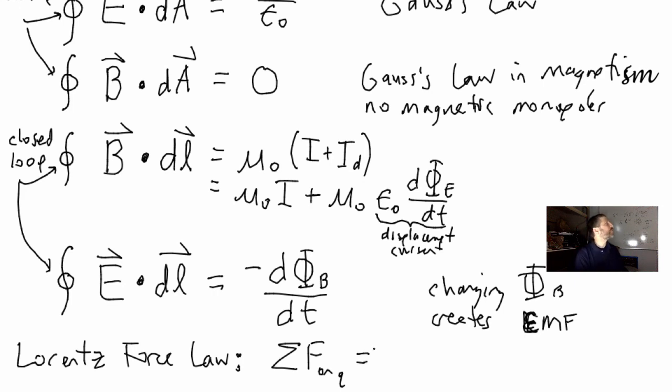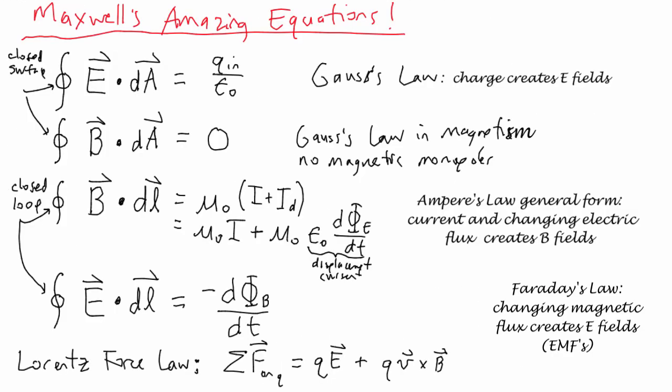Q times what? E. QE. That's a vector, this is a vector too, plus what's the magnetic force on a charge? QV cross B.